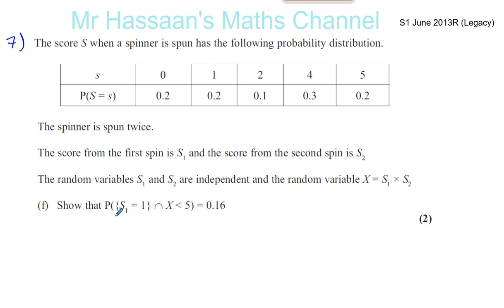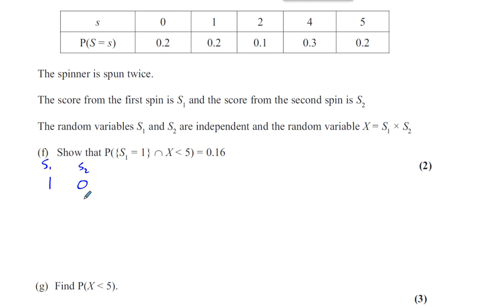Part F says: show that the probability that S1 equals 1 intersected with X less than 5 is equal to 0.16. So if the first spinner shows a 1, and the product X = S1 × S2 is less than 5, we need to show that probability is 0.16. If S1=1, then S2 can be 0, 1, 2, or 4 — all giving products less than 5. But if S2 = 5, that gives 1 × 5 = 5, which is not less than 5, so it's excluded.